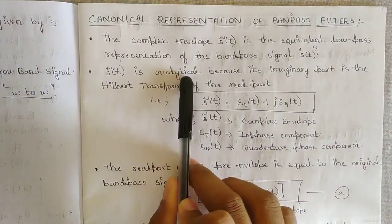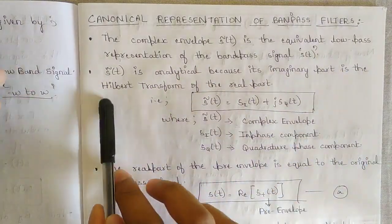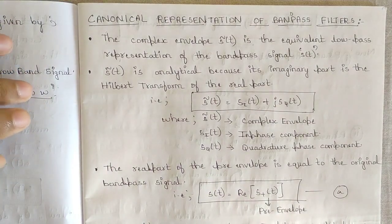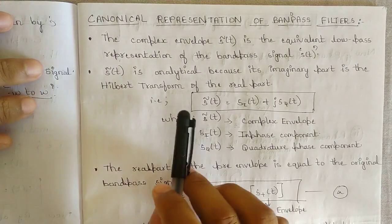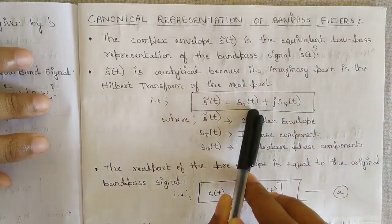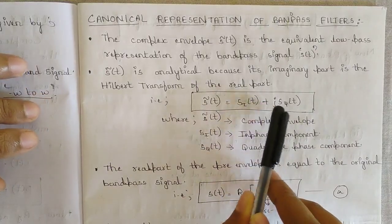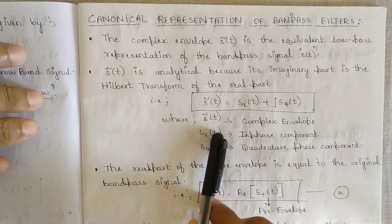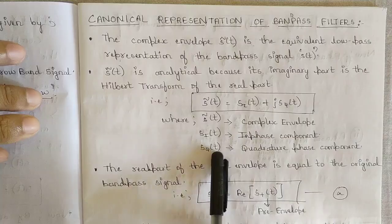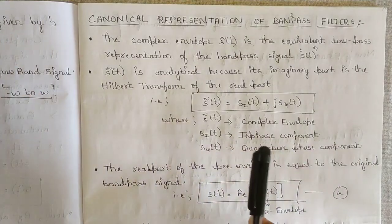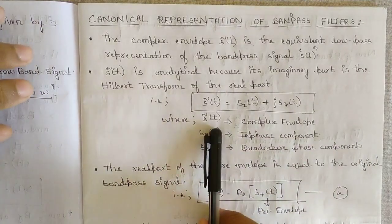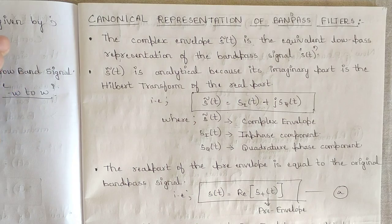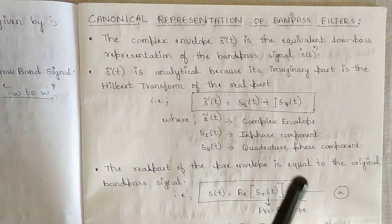The imaginary part is the inverse transform of the real part. So s̃(t) is defined as s_i(t) + j·s_q(t), where s̃(t) is the complex envelope, s_i(t) is the in-phase component, and s_q(t) is the quadrature phase component. These two components s_i and s_q are mainly responsible for the canonical representation of band pass signals.